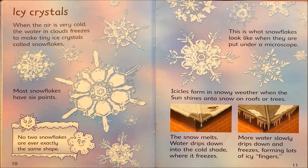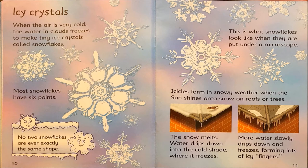Icy crystals. When the air is very cold, the water in clouds freezes to make tiny ice crystals called snowflakes. Most snowflakes have six points. No two snowflakes are ever exactly the same shape — this is what snowflakes look like when they are put under a microscope. Icicles form in snowy weather when the sun shines onto snow on roofs or trees. The snow melts, water drips down into the cold shade where it freezes, and more water slowly drips down and freezes, forming lots of icy fingers.